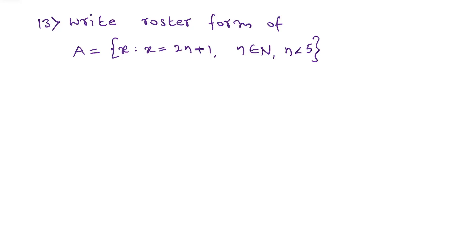The question is: write the roster form of set A equals {x such that x equals 2n plus 1}, where n belongs to natural numbers, n is less than 5. So first, take the formula which is given: 2n plus 1.